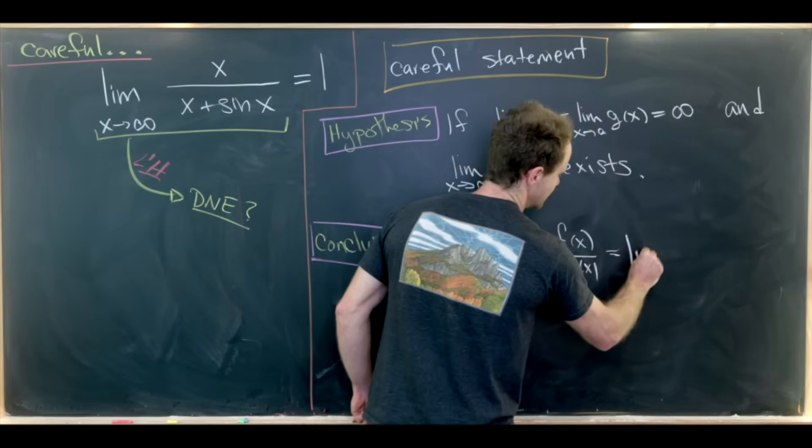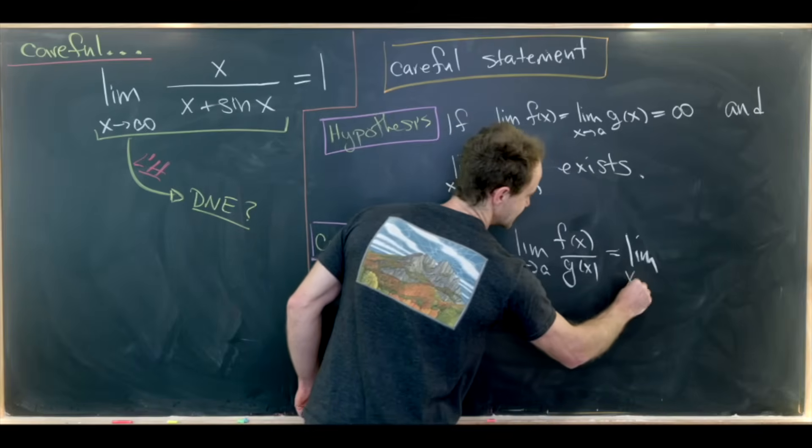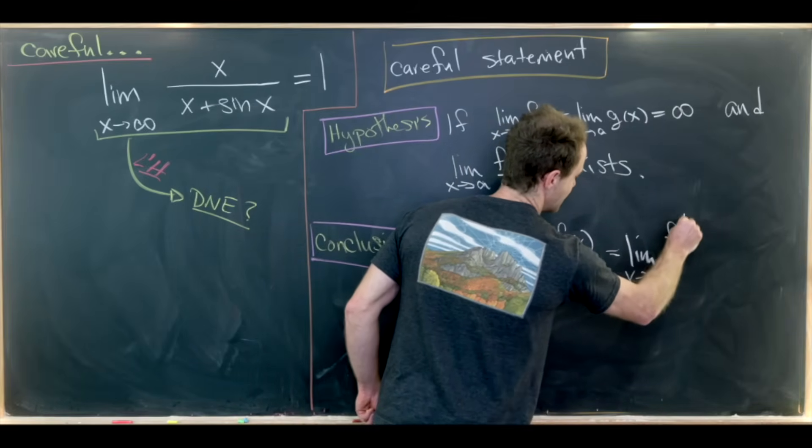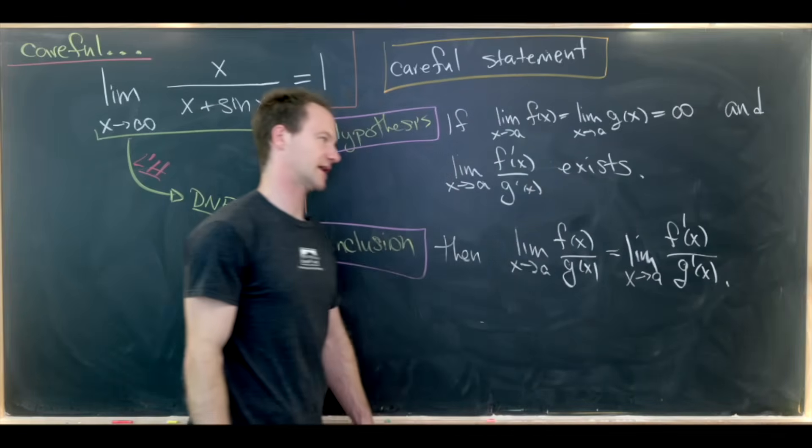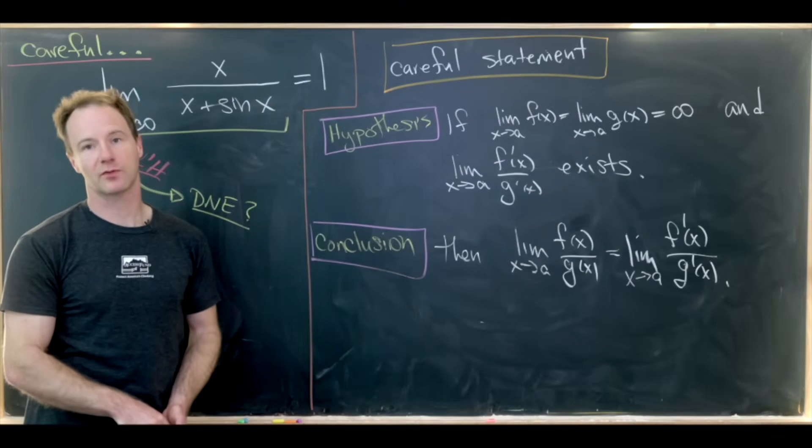Then the limit as x goes to a of f of x over g of x must be equal to the limit as x goes to a of f prime of x over g prime of x. So what happened for our problem?